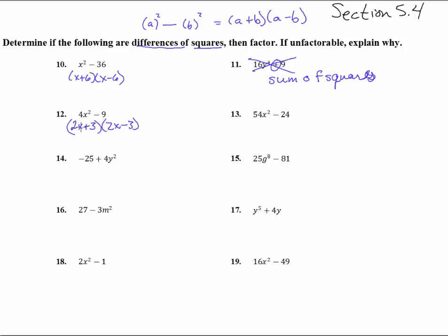4x squared is 2x altogether squared. Here we have a difference, but 24 is not a square. 54 is not a square. But is there something that can come out of both of those? Indeed, there's a 6 that comes out. And you get 9x squared minus 4. Look at those pretty square numbers right there. So this will go a little bit further and go 3x plus 2 and 3x minus 2. There we go.